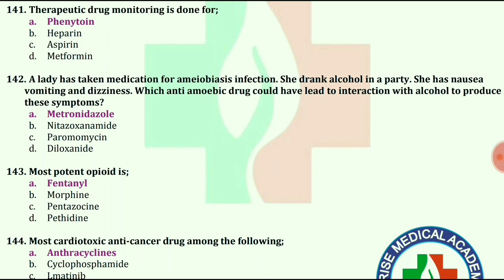A lady has taken medication for amoebiasis infection. She drank alcohol at a party and has nausea, vomiting, and dizziness. Which anti-amoebic drug could have led to interaction with alcohol to produce these symptoms? The answer is metronidazole.